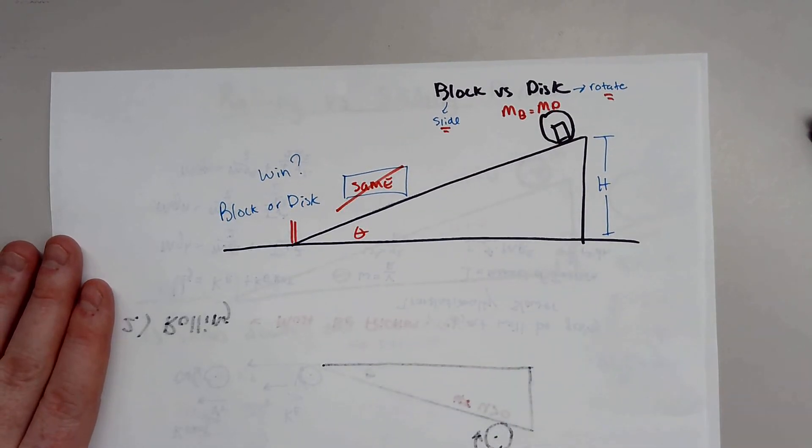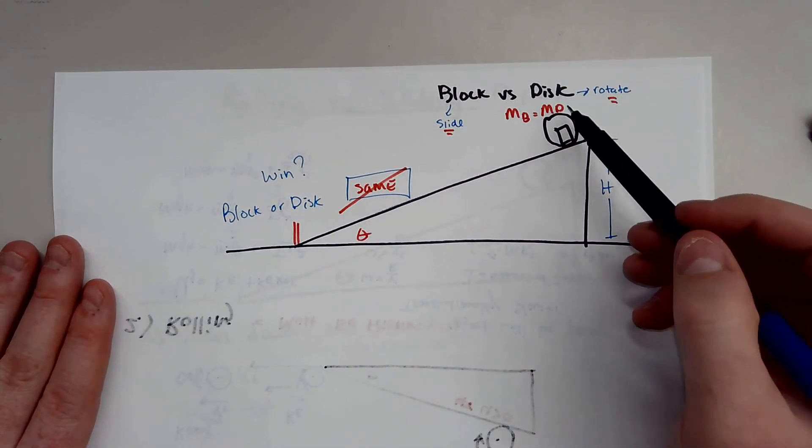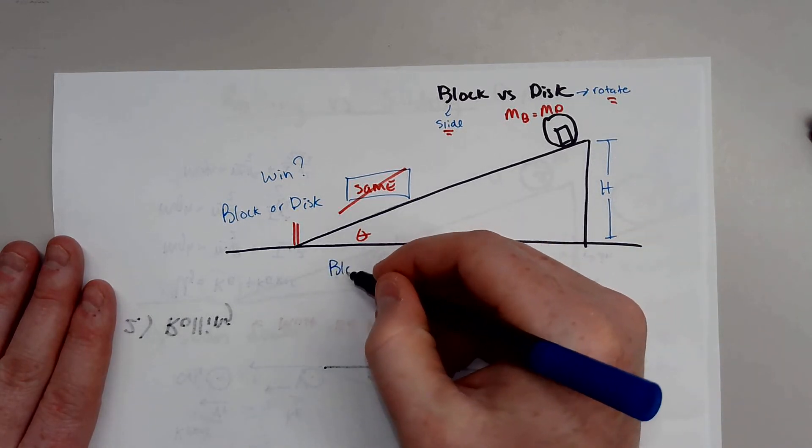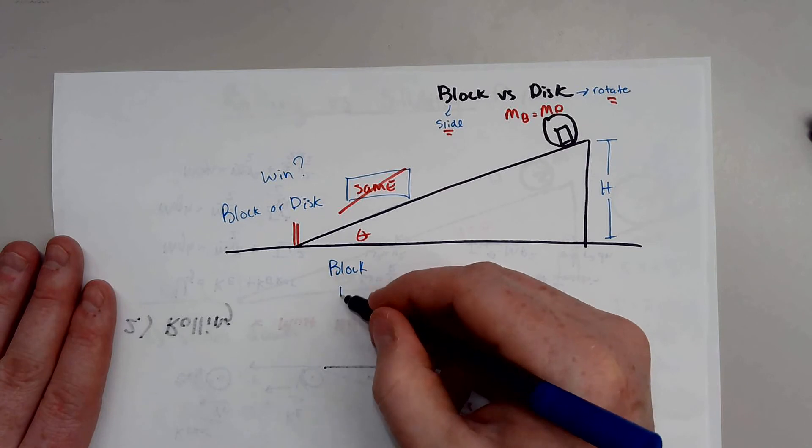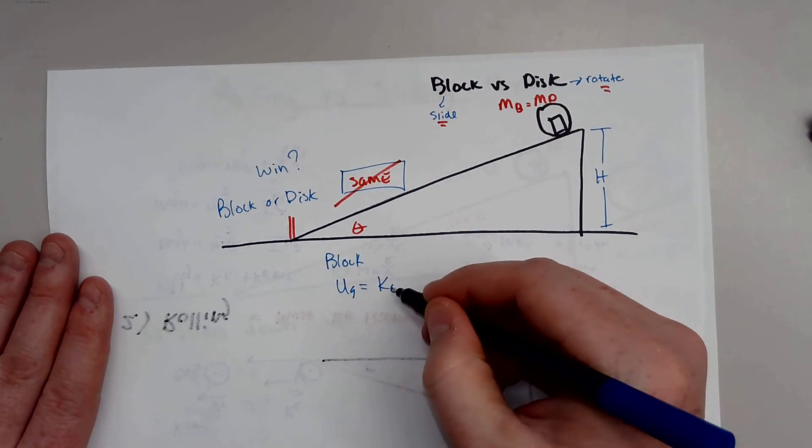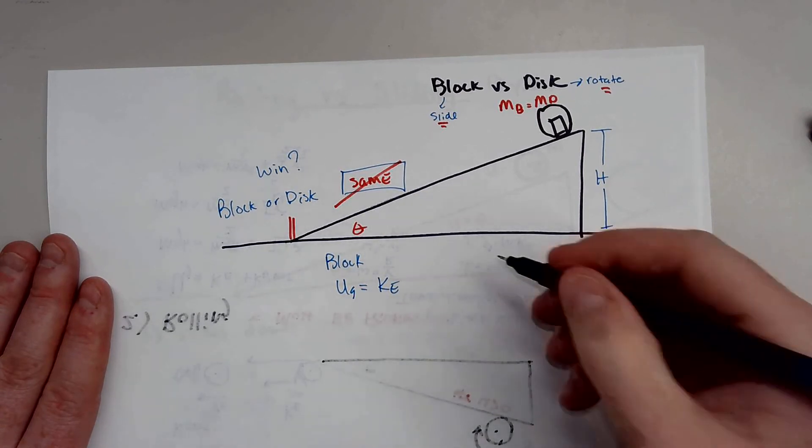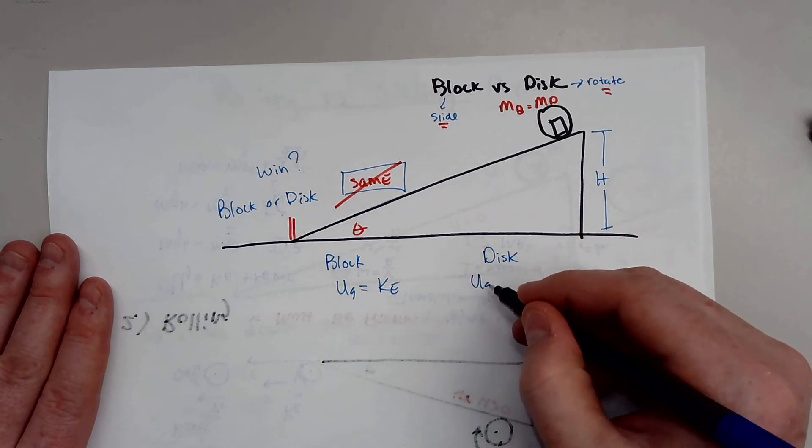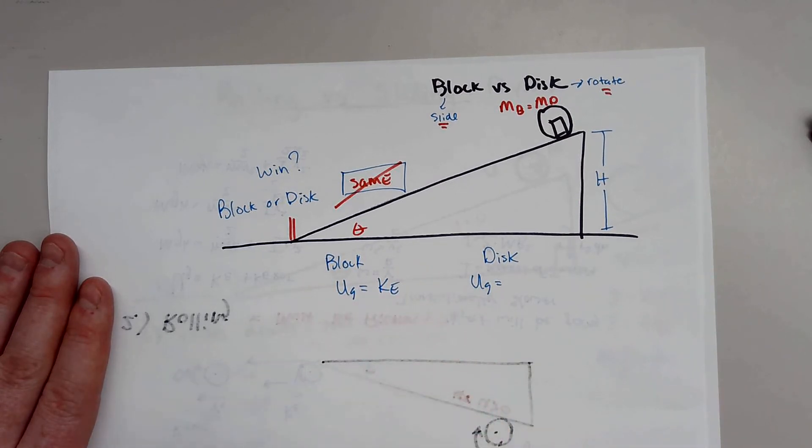Because the block is sliding and the disk is rotating. Like we talked about at the bottom for the block. When the block will have potential energy, and all of that potential energy will get transferred to kinetic energy. But the disk is rotating. Now, yes, the disk will have the exact same amount of potential energy at the top.